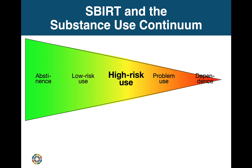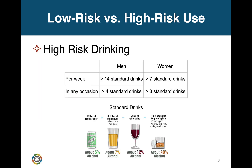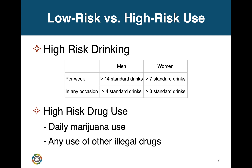High-risk use is substance use that has not caused any negative health or social consequences but is likely to do so in the future. Here are the definitions of low-risk and high-risk drinking, which are based on hundreds of studies comparing drinking patterns of people with and without alcohol-related health and social consequences. There has not been enough research to establish similar cutoffs for high-risk use of marijuana or other drugs, but most experts regard daily use of marijuana or any use of other illegal drugs as high-risk.